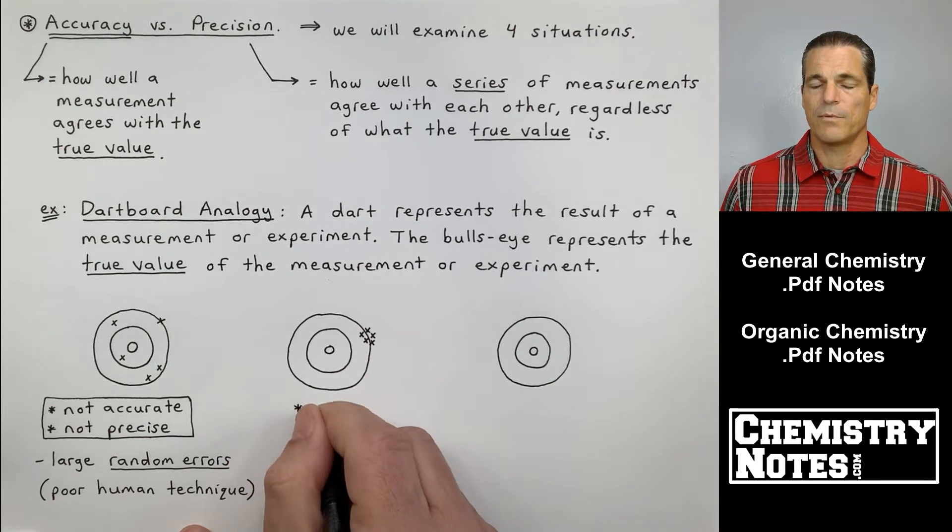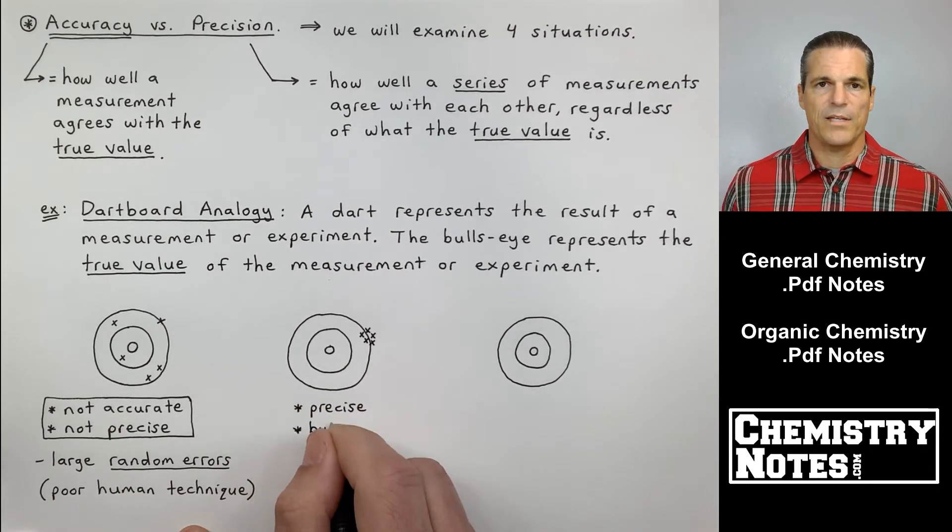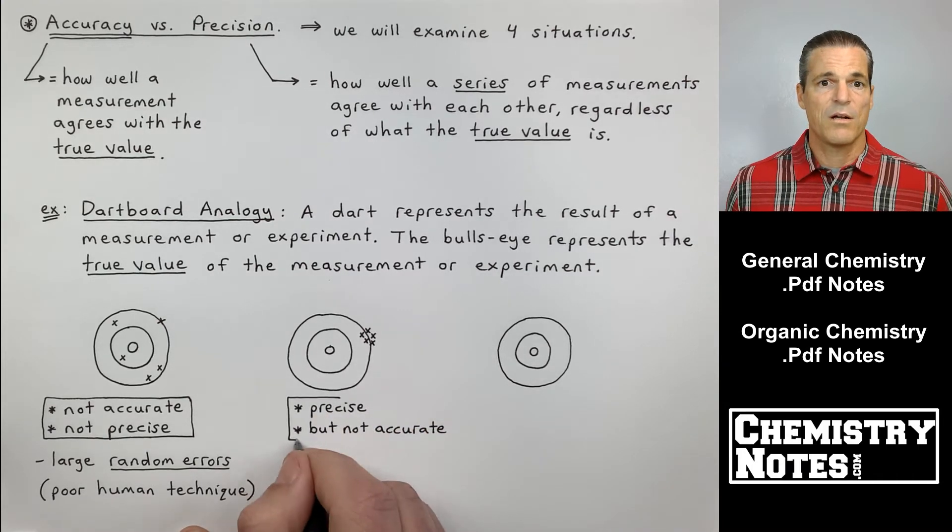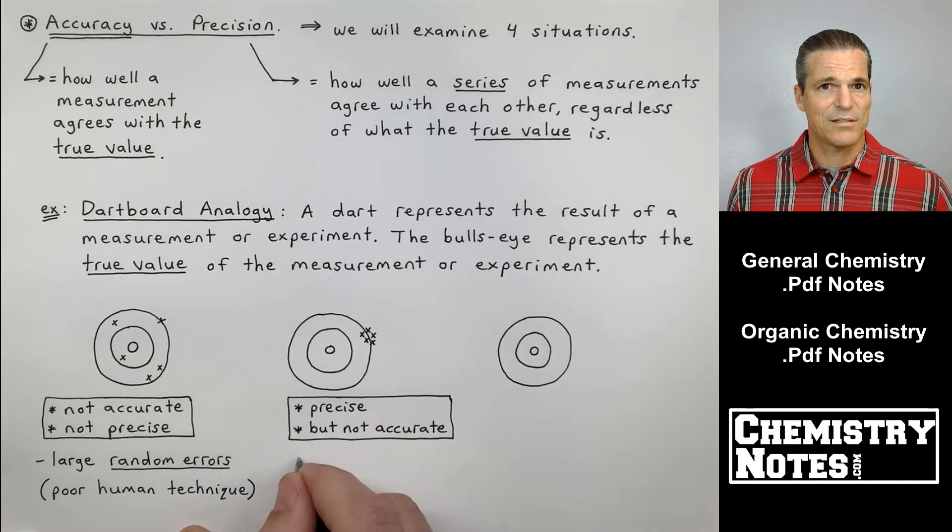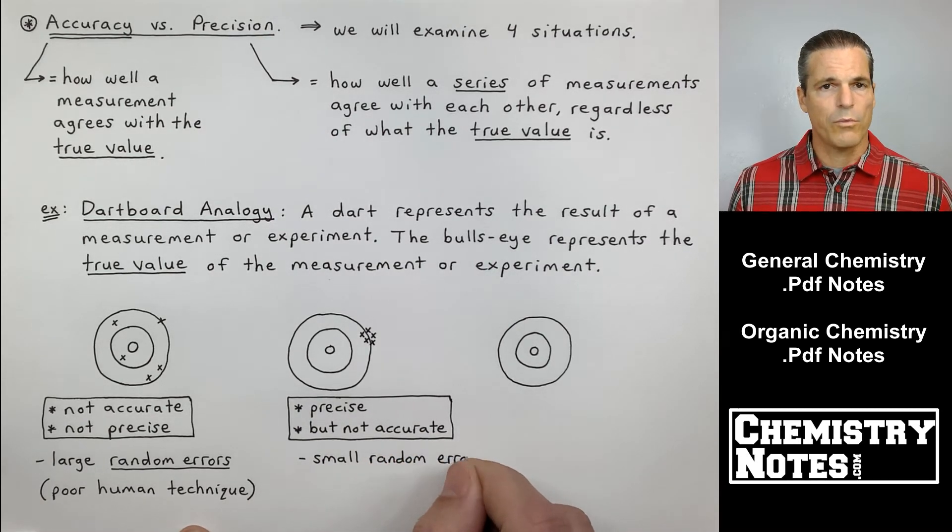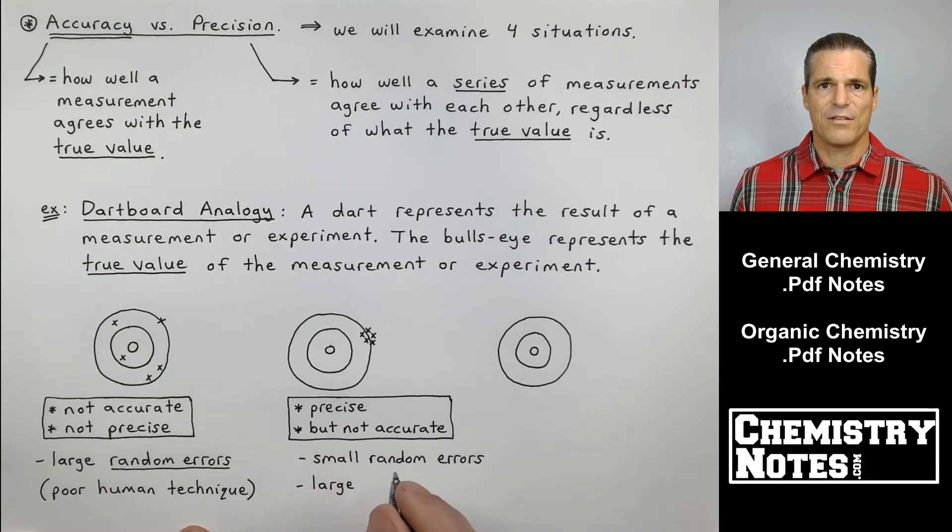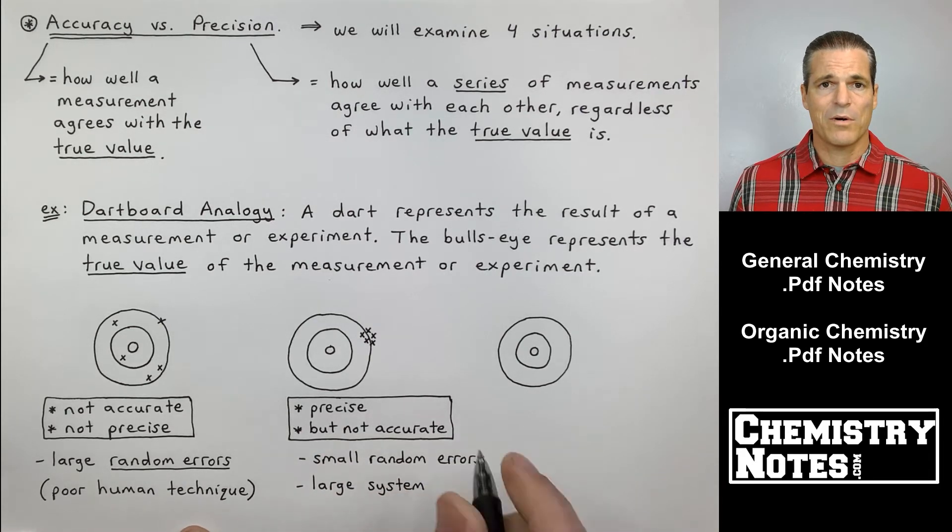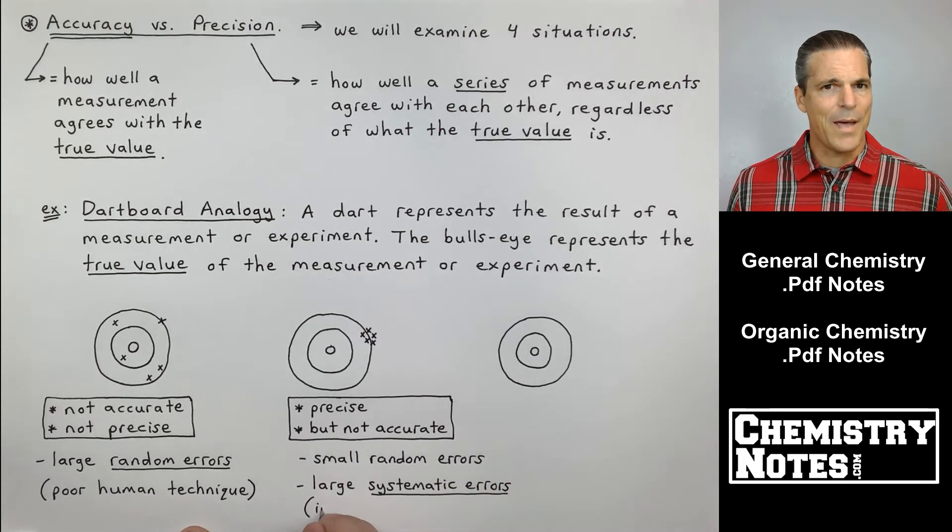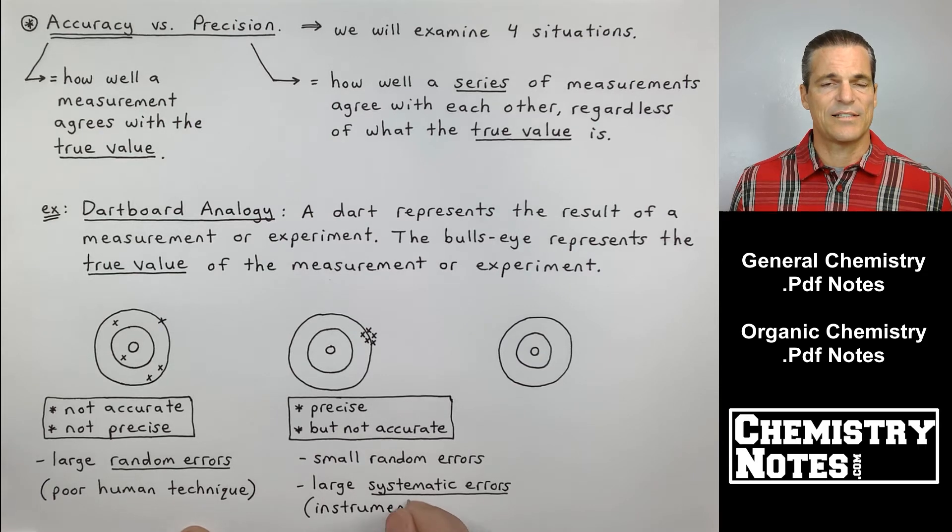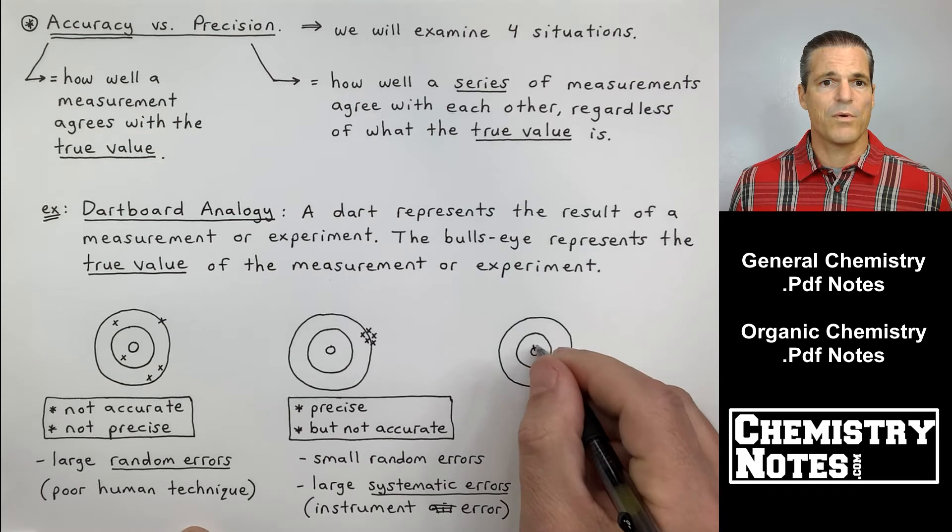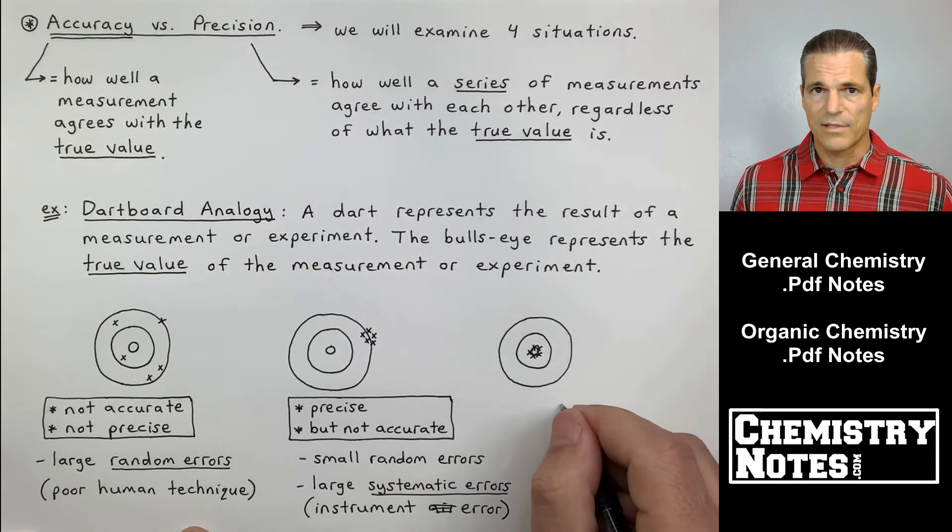Now take a look at dartboard number two. All five darts, all five experiments, all five measurements, whatever they represent, are right on top of each other. So we're precise. So we have good technique. No human errors, no random errors. But we're nowhere near the bullseye. So the results that we're getting every single time are precise, but they're not accurate. If we're not accurate, we have large systematic errors. We have an instrumentation error. Something is wrong with our instrument or our glassware.